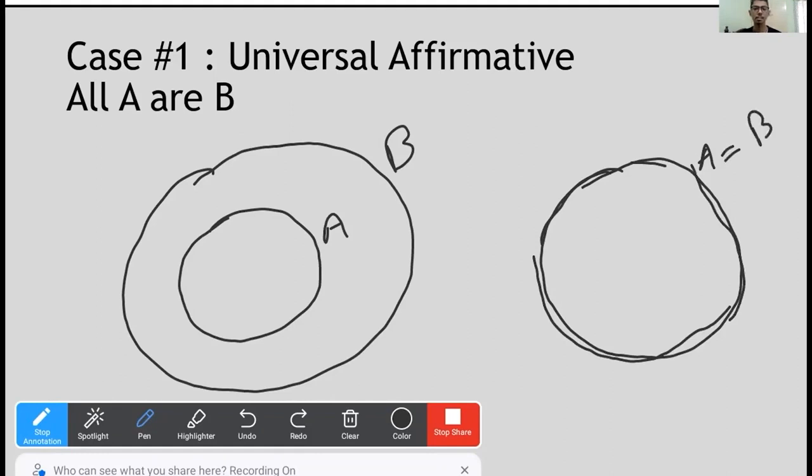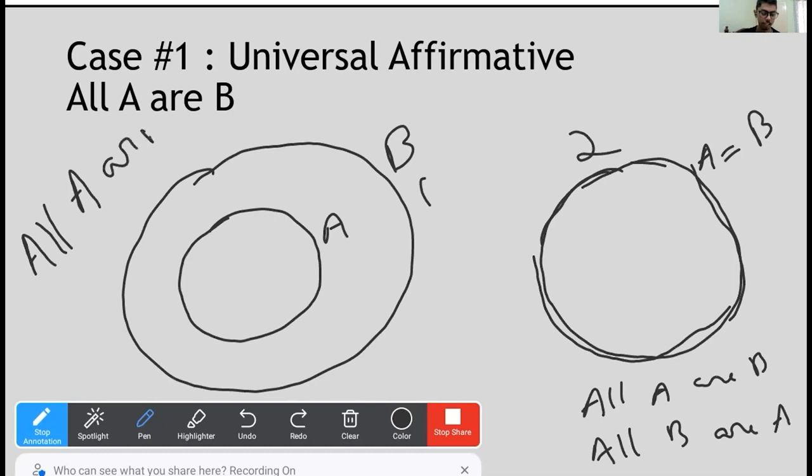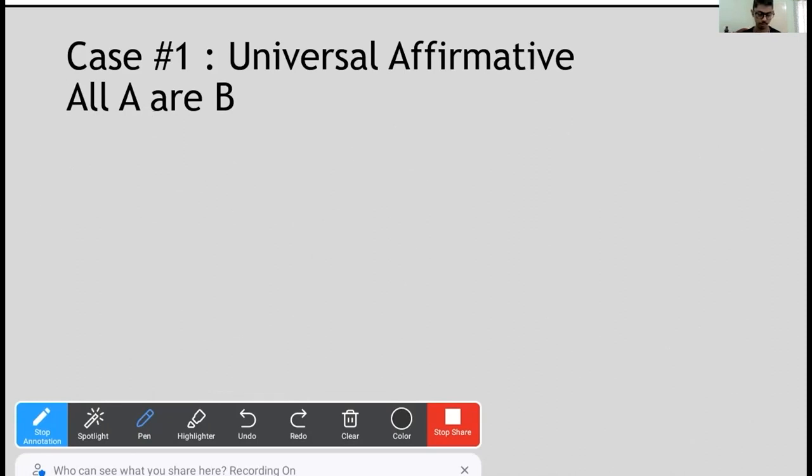You can say A is equal to B. I hope you got the point. So A and B are similar circles, the same thing, but we have different terms. So you can say in this case, all A are B. At the same time, all B are A. That's the difference between case one and case two. Here, all A are B. In case one, all A are B, but the vice versa is not happening. All B are not A.